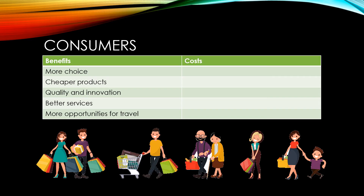One of the problems that globalisation gives rise to for consumers is homogenisation. This is because very large international firms outcompete smaller, more local firms, and the experience of going shopping in any developed country can be very similar, with a lot of the same brands on offer for a lot of the same products. Price volatility is the other big cost that consumers in developed countries face from globalisation, as markets have a large amount of demand that can sway very quickly, causing big changes in price. Recent problems to supply caused by the pandemic and Russia's invasion of Ukraine have shown quite how extreme price volatility can be and the big effect it can have on consumers.